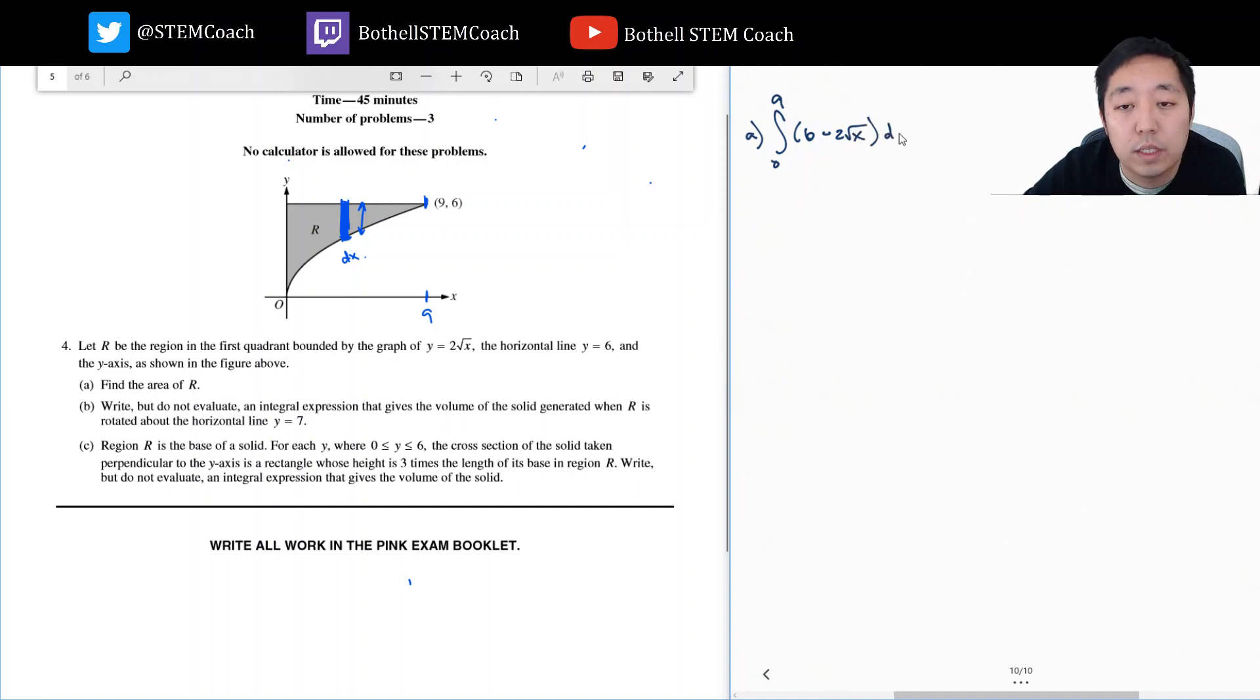I want the height of that function in terms of x. Why is this height 6 minus that? Because this height is 6, the distance from here to here is 6. The distance from here to here is just y, which equals 2 root x. That's what the height is at a given x value. So this height of this rectangle is the difference between the two. The area of the rectangle is the height times the width.